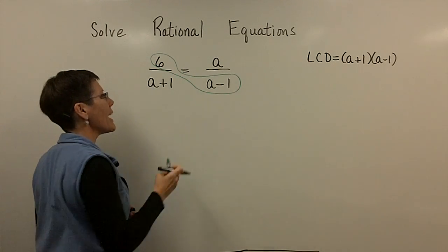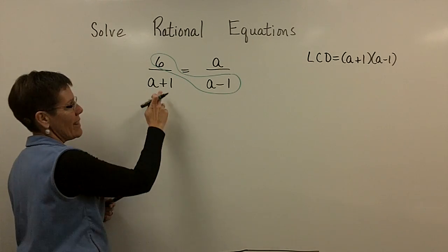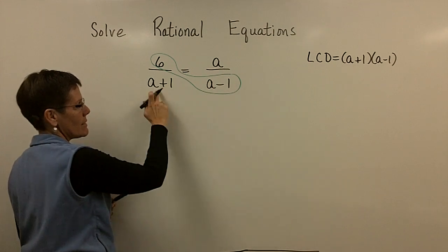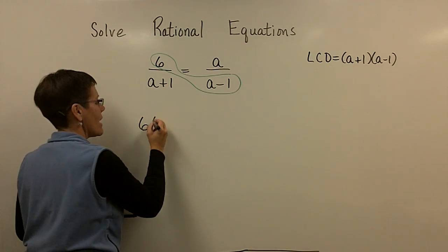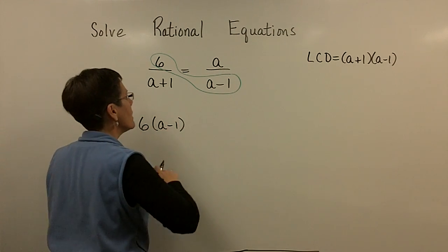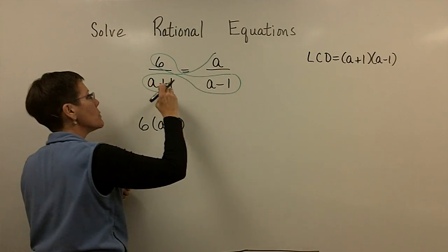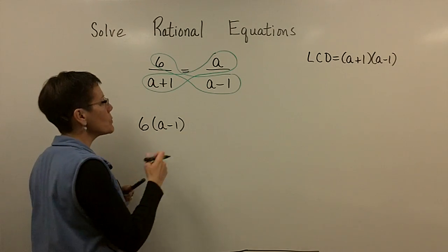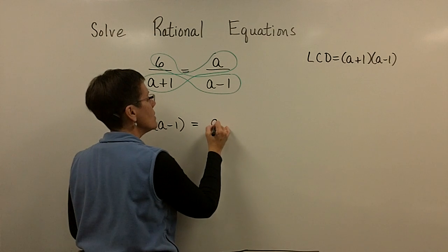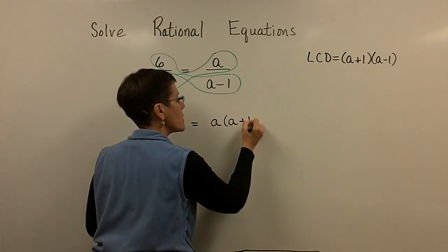The six needs to be multiplied by the a minus one. That was the missing piece in this denominator. And then the a here needs to be multiplied by the a plus one. I'm setting the cross products equal to one another. So I have a times this a plus one.